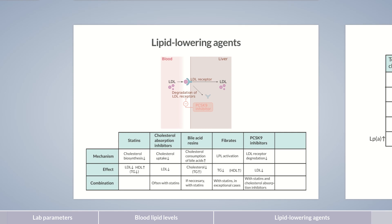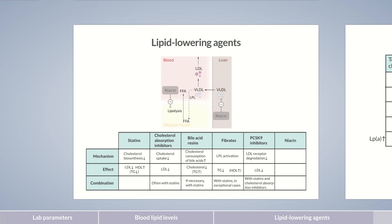Finally, we'd like to point out the lipid-lowering effect of niacin, or vitamin B3, which is one of the oldest and inexpensive antihyperlipidemic agents still used in the US. Niacin inhibits lipolysis and therefore particularly decreases the level of triglycerides in blood. To a lesser extent, it also lowers LDL levels. So that wraps it up for laboratory parameters and therapeutic options of dyslipidemia. You can now test your knowledge with a quiz on the next slide.